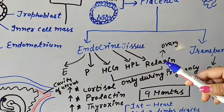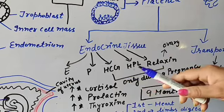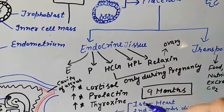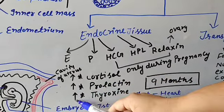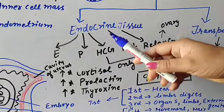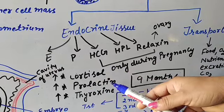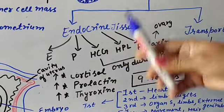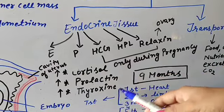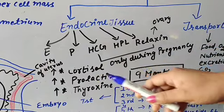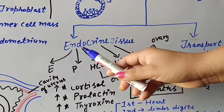In a pregnant woman, many hormones are secreted, and these hormones are essential for the proper growth of the developing embryo. In addition, high amounts of cortisol, prolactin, and thyroxine are also present in the mother's blood. Cortisol is released from the adrenal gland, prolactin from the pituitary gland, and thyroxine from the thyroid gland, which is very essential for the metabolic function of the developing embryo.